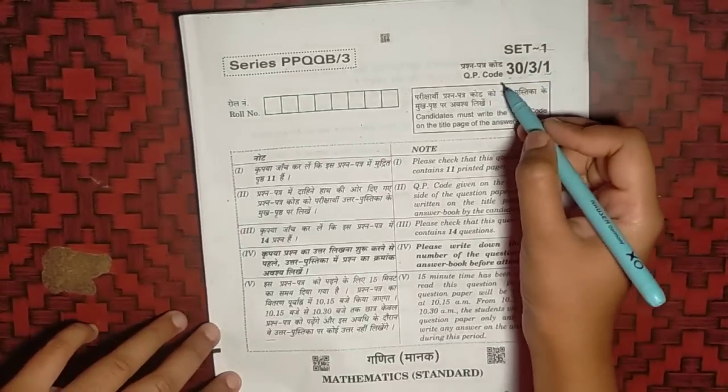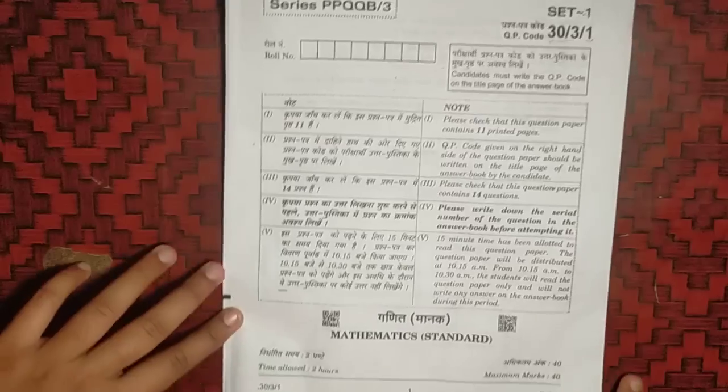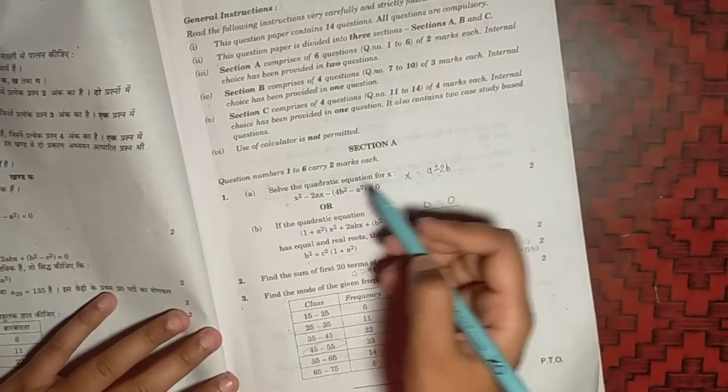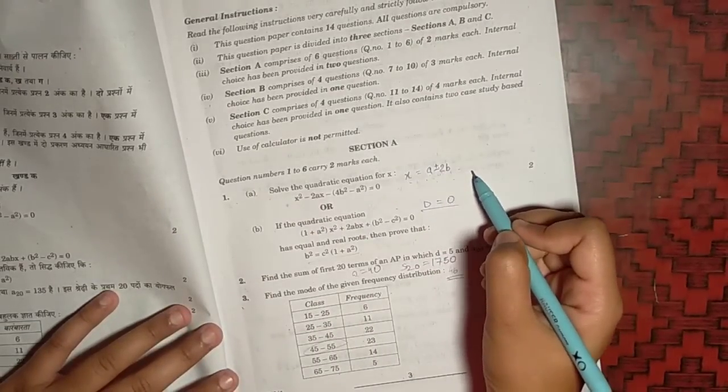Hello everyone, we have set 1, question paper code 33-1, math standard paper. First question, part A, the answer is x equals to A plus minus 2B.